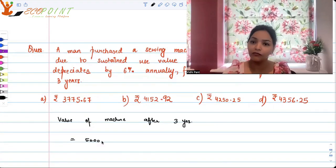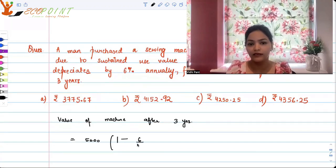When you invest and compound interest mil raha hai, then it's adding, right? Now depreciate ho raha hai, so it will be minus. So 5000 into 1 minus 6 upon 100 to the power of 3, because 3 years ka baat ho raha hai.